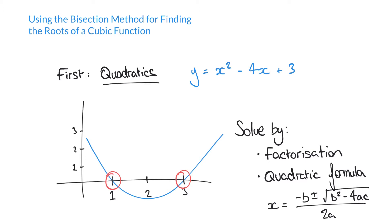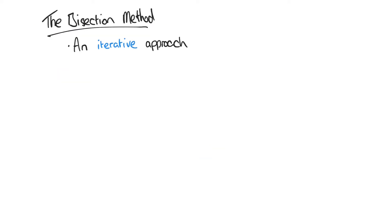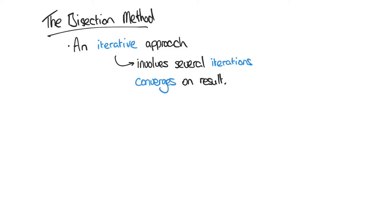One of the reasons we can use the bisection method is because it doesn't involve any complicated mathematics, but it does involve a lengthy step-by-step approach to converge on the root of the function as an approximation. We call the bisection method an iterative approach because we're going to move through several iterations, each time getting closer and closer to the actual result, unlike the quadratic formula which gives an immediate answer in one step.